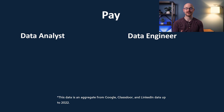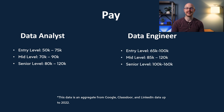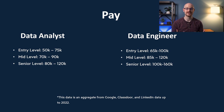The last thing we'll look at is salary. For a data analyst: entry level is $50,000–$75,000; mid-level is $70,000–$90,000; and senior level is $80,000–$120,000. For a data engineer: entry level is $65,000–$100,000; mid-level is $85,000–$120,000; and senior level is $100,000–$160,000. These are averages across the board — many factors play into actual pay, like years of experience, location, and other variables.